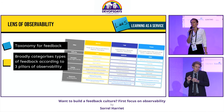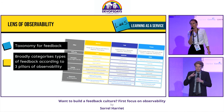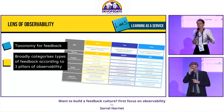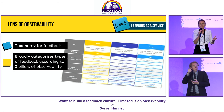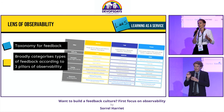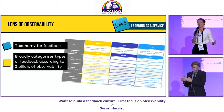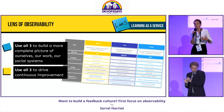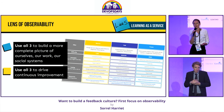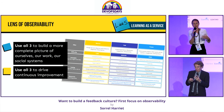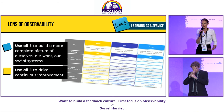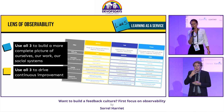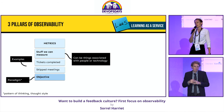So I came up with this tool, which I've called the Lens of Observability. It's essentially a taxonomy for feedback that broadly categorizes types of feedback into three categories according to the three pillars of observability. The idea is that we use all three consciously and deliberately to build a more complete picture of ourselves, our work, and our social systems — and to drive continuous improvement.